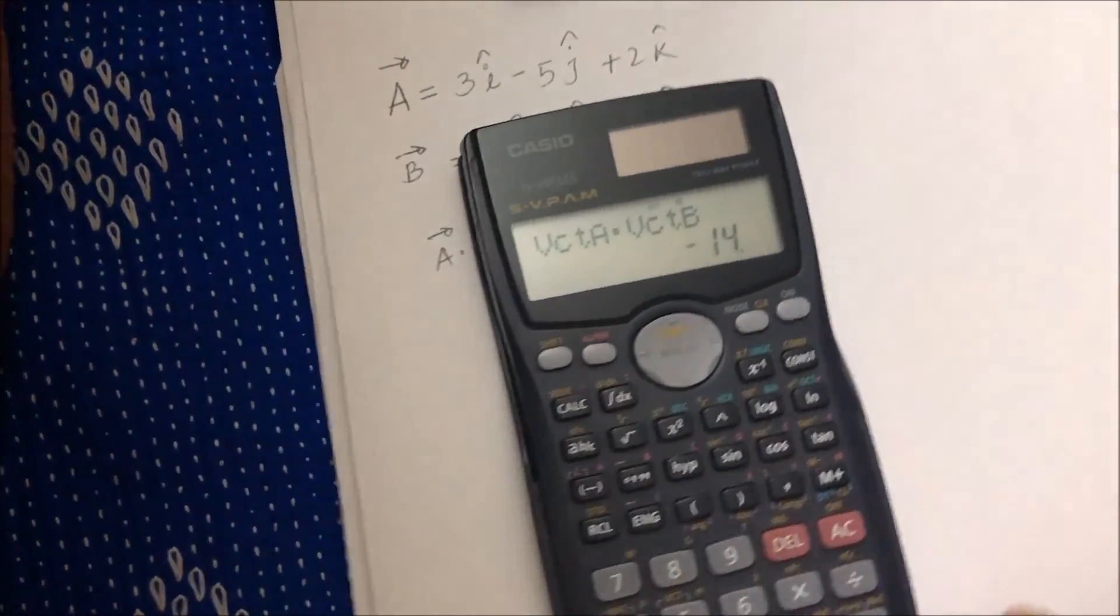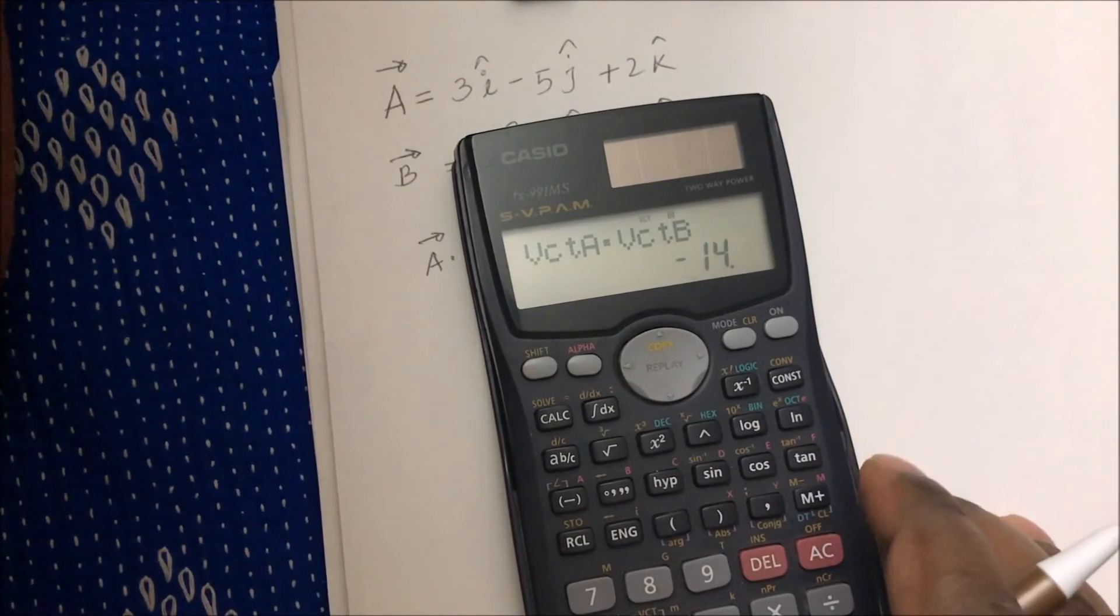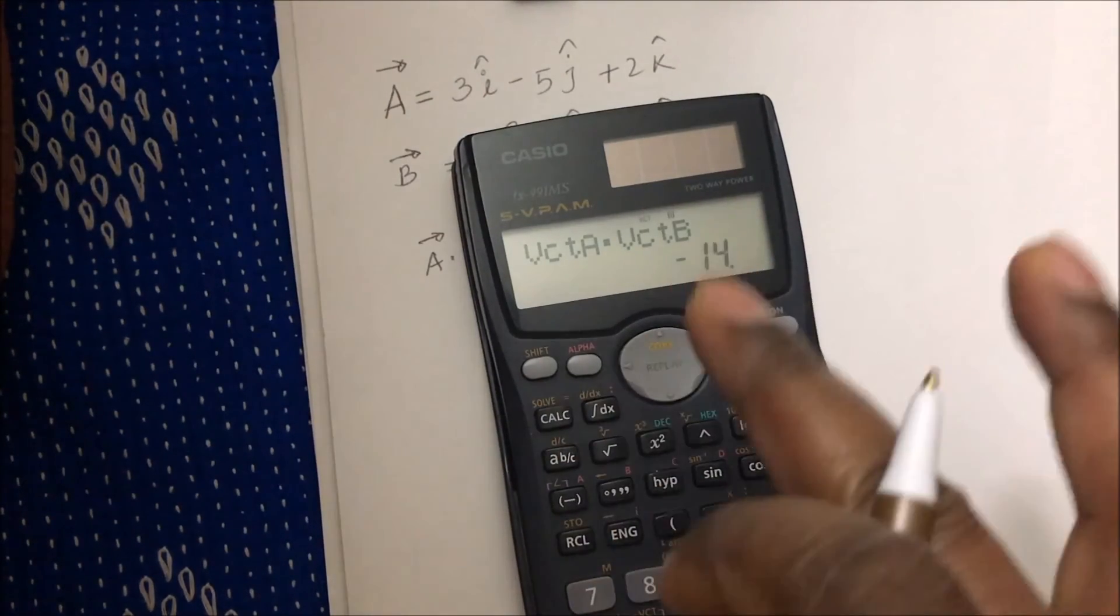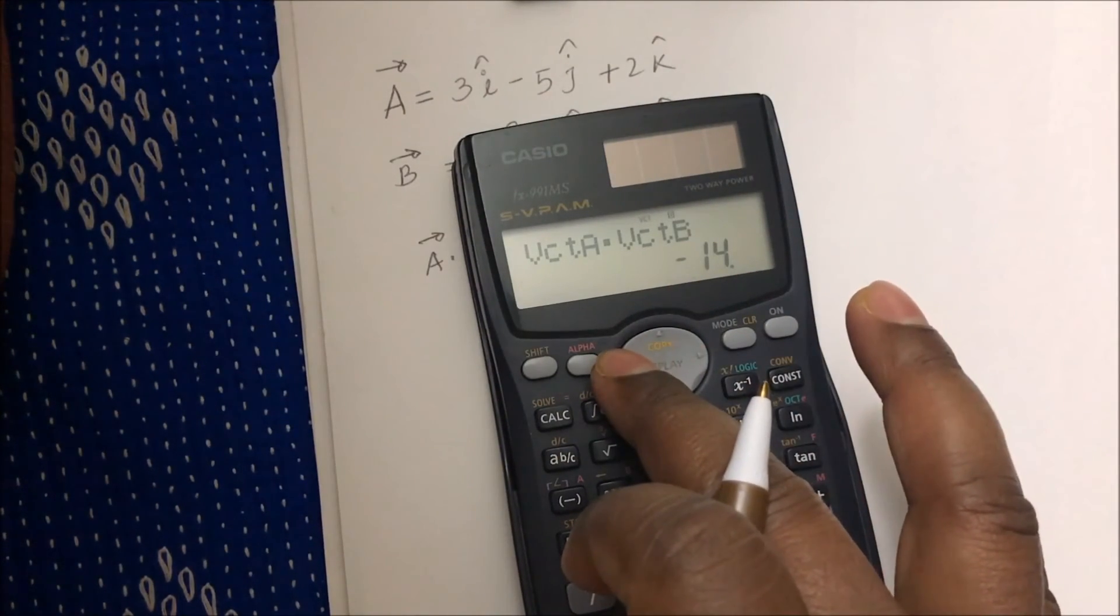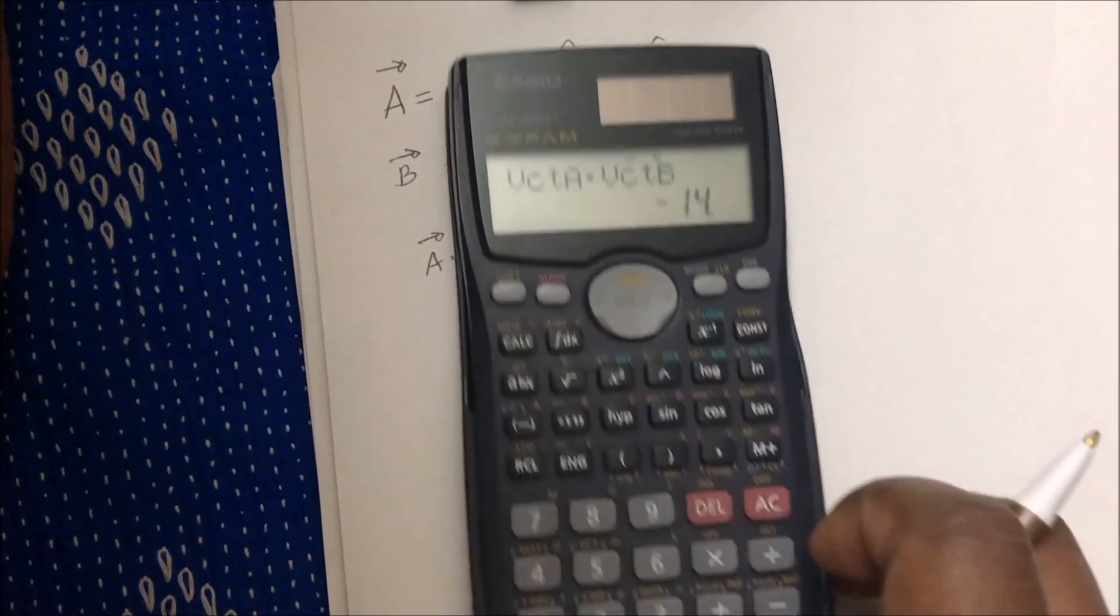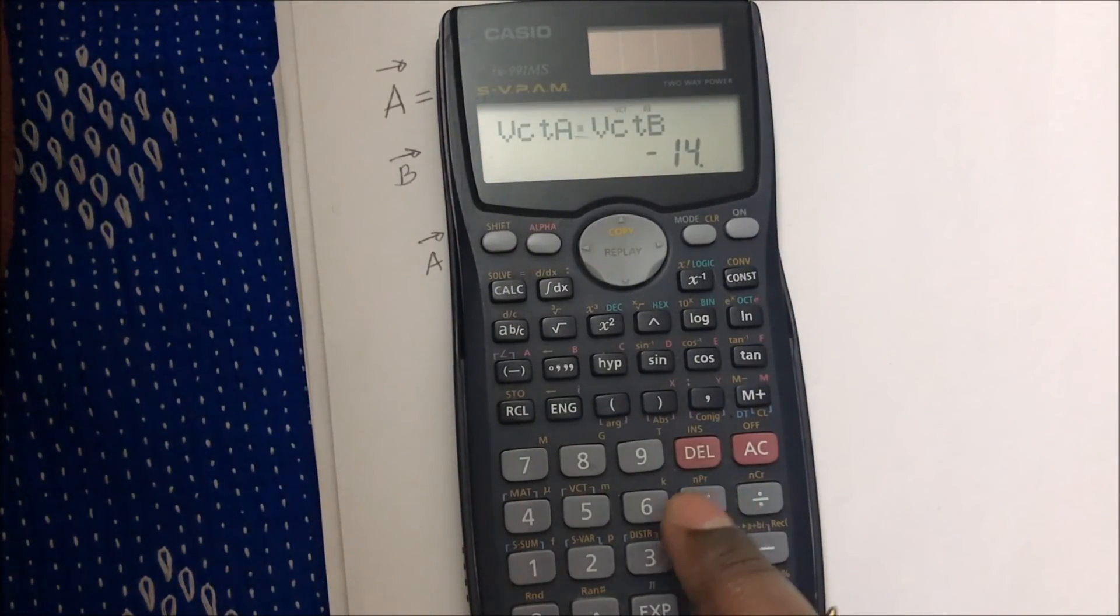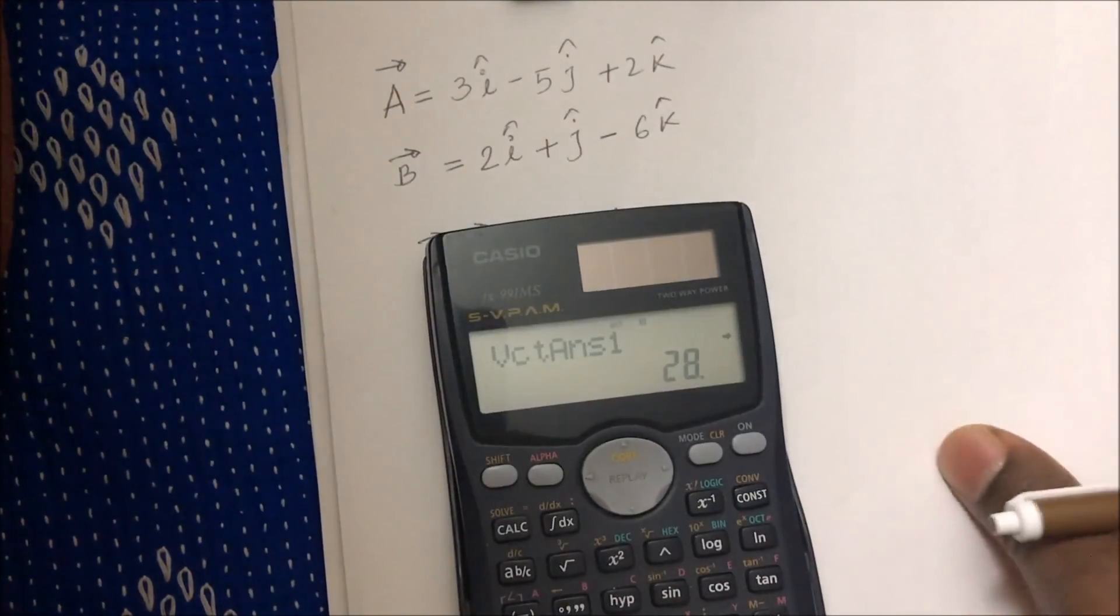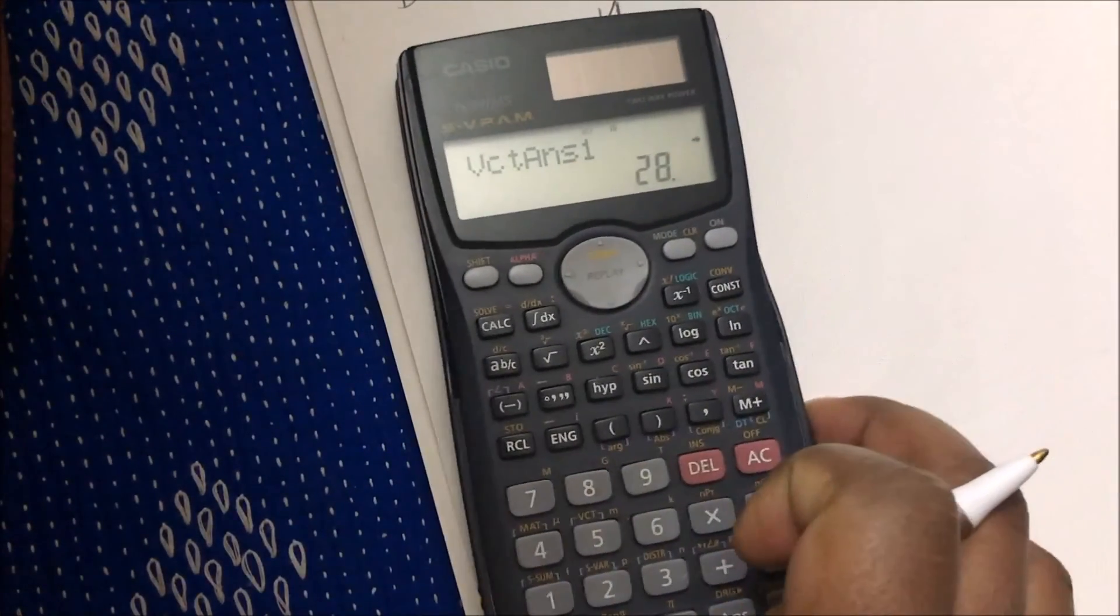If I didn't put any value mistake, then this should be the answer. For cross product, you can just edit this dot to a cross. Otherwise, everything will be similar. So I'm not going to do everything again. I will just edit this dot to cross. Cross means this is my cross. Okay, I'll just change this and it will be my cross product.